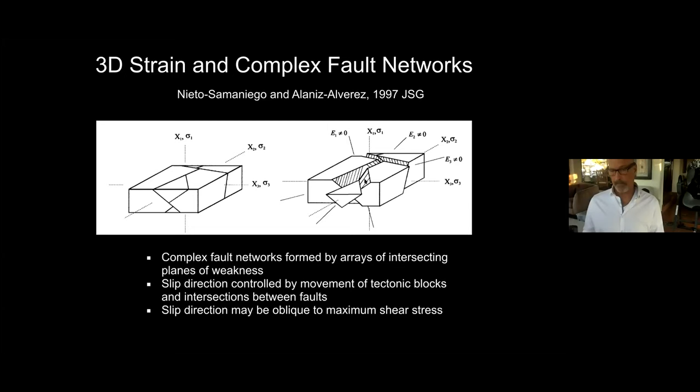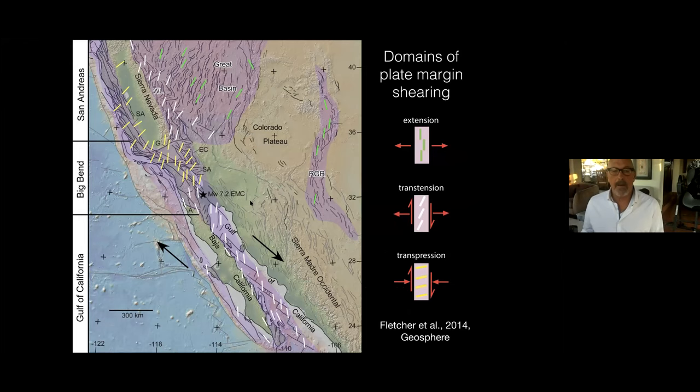We'll now look at the structural relationships of the El Mayor Cucapah earthquake, which occurred in the central portion of the Pacific–North American plate margin, where transtensional shearing in the Gulf of California changes to transpressional shearing along the San Andreas. Both of these oblique shear regimes produce strongly three-dimensional strain and are characterized by complex fault networks.